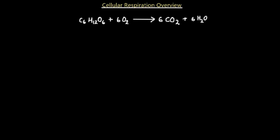Before we begin looking at the steps of glycolysis, we must do our cellular respiration overview to see what the process is like, where it occurs, and what the general reactions are. We'll begin with the overall redox reaction of cellular respiration to see what is oxidized and what is reduced, because this is the opposite reaction of photosynthesis. In photosynthesis, we begin with water and carbon dioxide — we fixate CO₂ and produce an organic compound, releasing oxygen into the atmosphere.